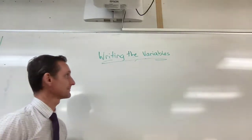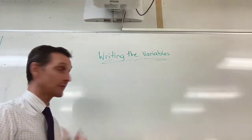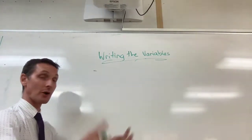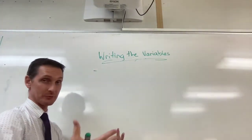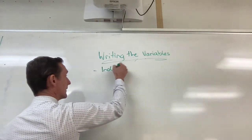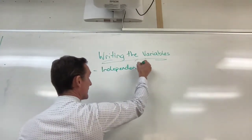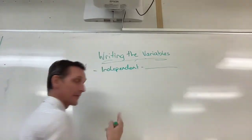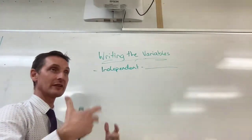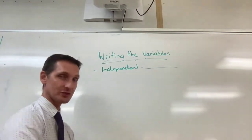Writing your variables — this can be done in a list. The first variable under your hypotheses would be your independent variable. The independent variable is the one that you as the experimenter choose to change.